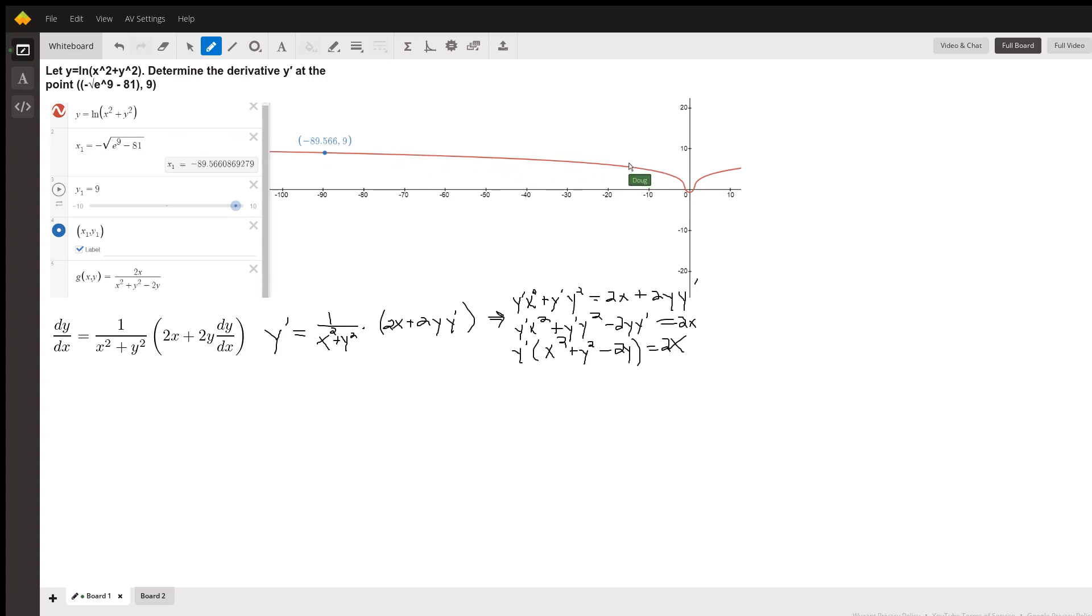Symmetric about the y-axis. And I've let x sub 1 equal the opposite of the square root of e to the 9th minus 81, and y sub 1 equals 9.